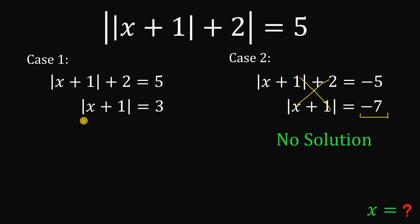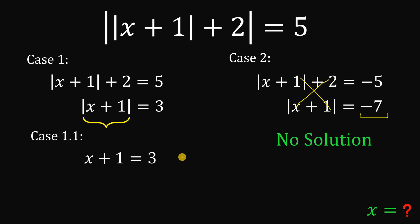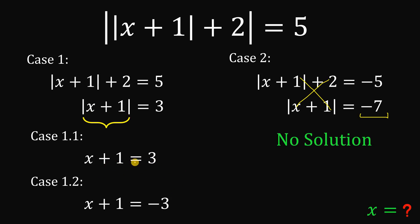So now let's continue with case 1. We have absolute value of x plus 1 equals 3. Again, we have two possible sub-cases. Case 1.1: x plus 1 equals positive 3. Case 1.2: x plus 1 equals negative 3. To solve case 1.1, subtract 1 on both sides — we get x equals positive 2. In case 1.2, subtracting 1 on both sides gives us x equals negative 4.